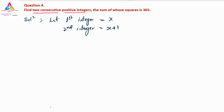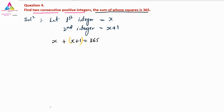The sum of whose squares is 365. Note carefully: they said squares — not just the sum. So it is not X plus (X plus 1) equals 365. We need squares: X squared plus (X plus 1) whole squared equals 365. This is the equation.